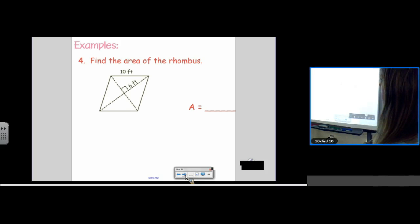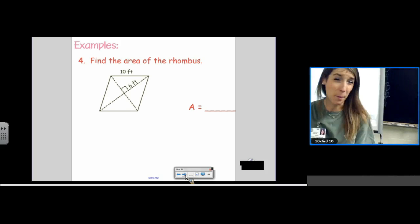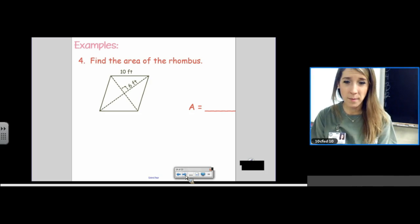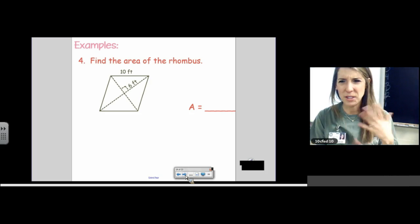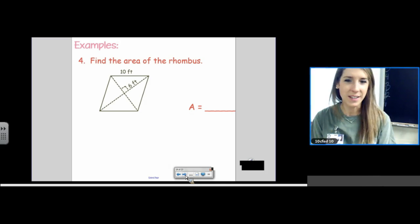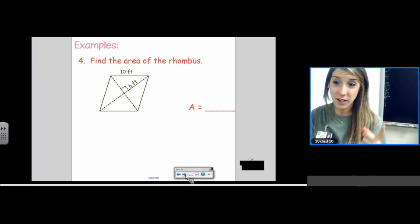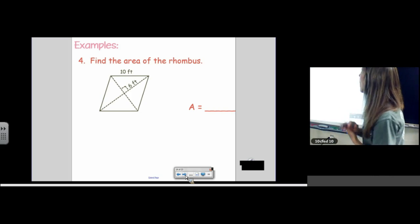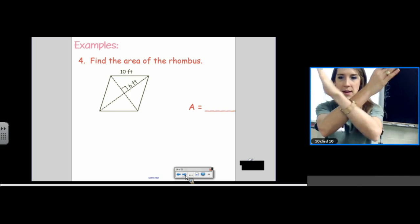Find the area of the rhombus. So, we need to remember some properties from our rhombus unit. But, why would you ever use diagonal times diagonal divided by 2 for a square? You would just do side squared, right? But, you could. You could use it. Okay, what did this hand motion mean? Arm motion mean?